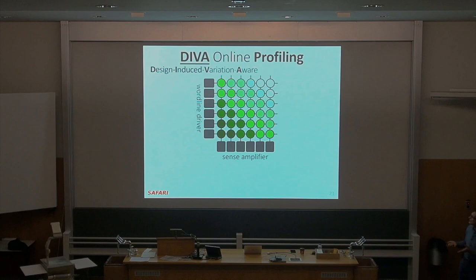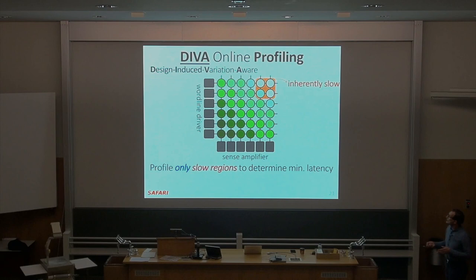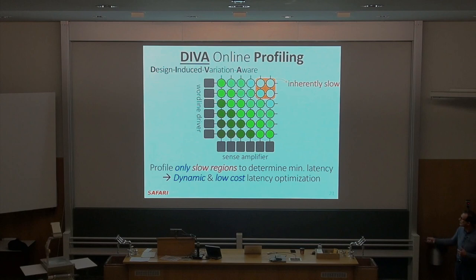This is called DIVA — Design Induced Variation Aware Online Profiling. Just figure out that inherently slow region. If the DRAM manufacturer provides that to you, profile only those regions to determine the minimum latency. You can get rid of a lot of cost and time in profiling because you don't need to waste time profiling whether you can access the other strong cells fast or slow.